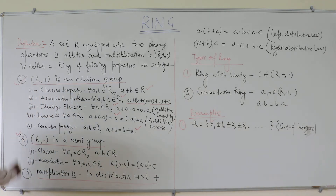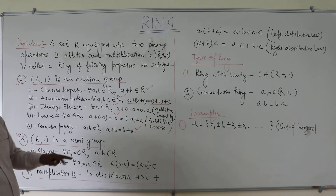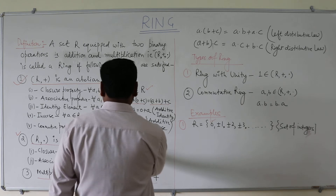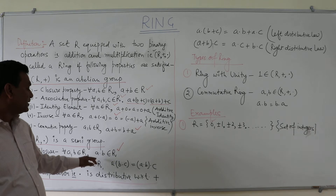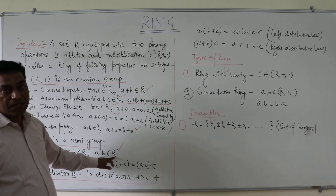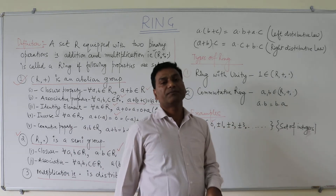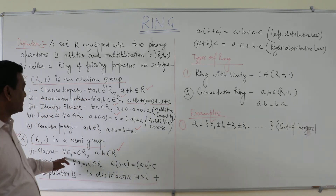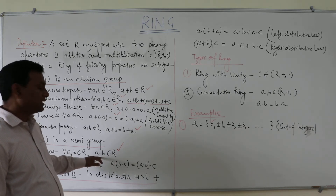Now we will see the second property: (R, ·) is a semigroup with respect to binary multiplication. First is the closure property — if we take two elements like 1 and 2, then 1 · 2 belongs to R, meaning the product is also an integer. So this property holds and the set R is closed with respect to binary multiplication. The second is the associative property — if we take three elements 1, 2, 3, then (a · b) · c = a · (b · c), so this property also holds.